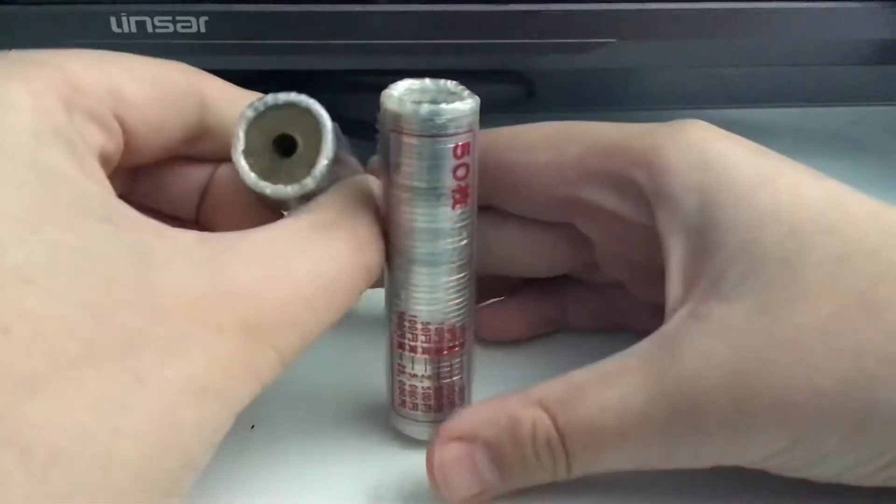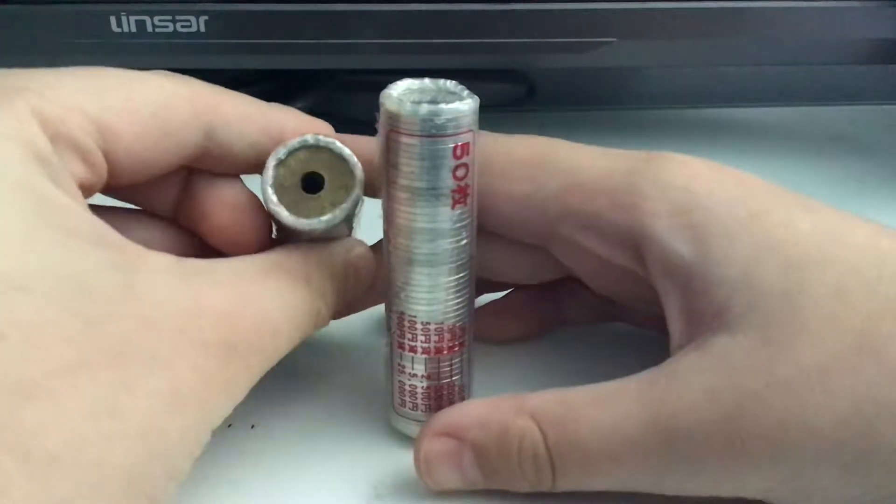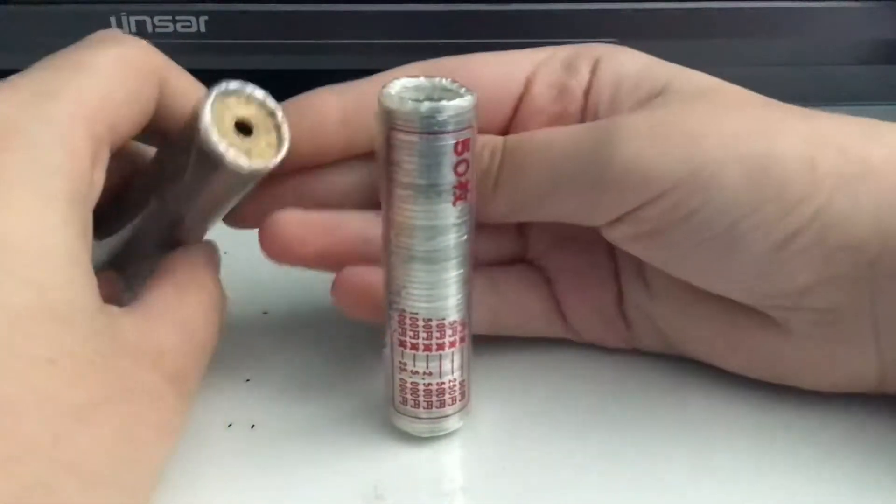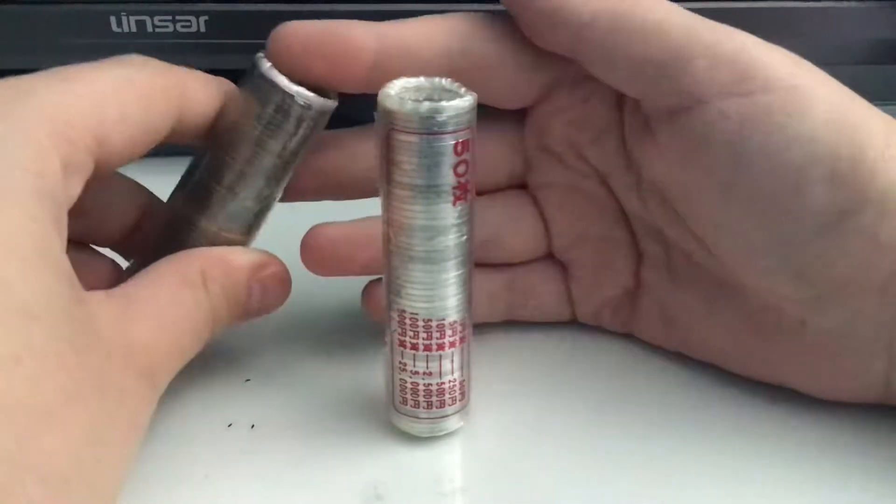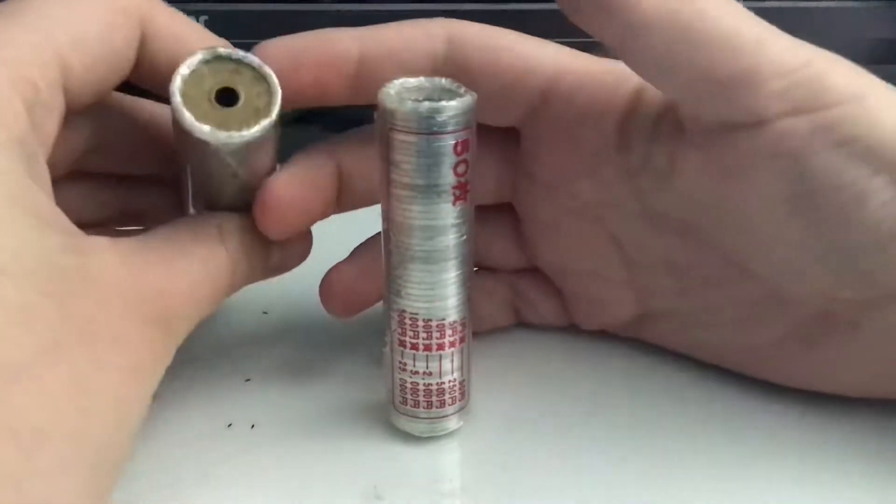Now, 5 yen coins supposedly are lucky in Japan. You often see them being placed on necklaces, key rings, but also there is a sort of idea that if you get a new wallet, you should put a 5 yen coin in at first to sort of ensure good fortune or something like that.